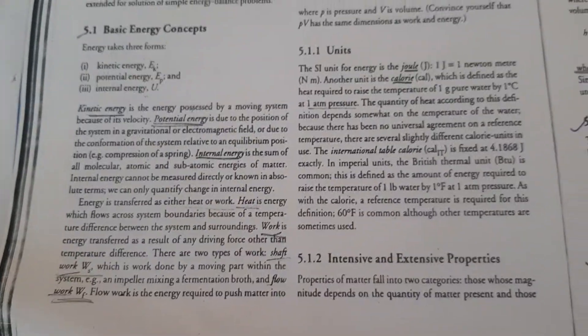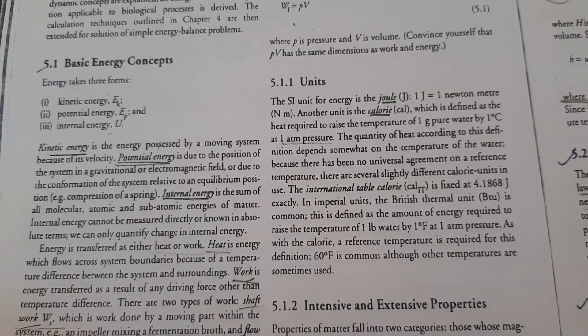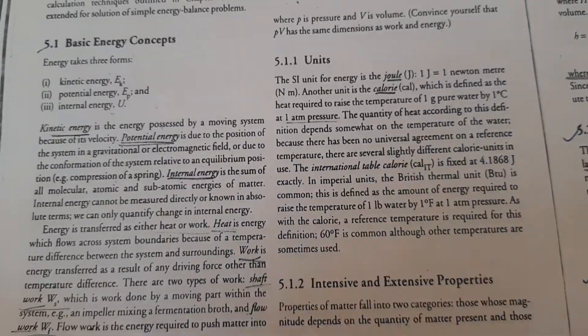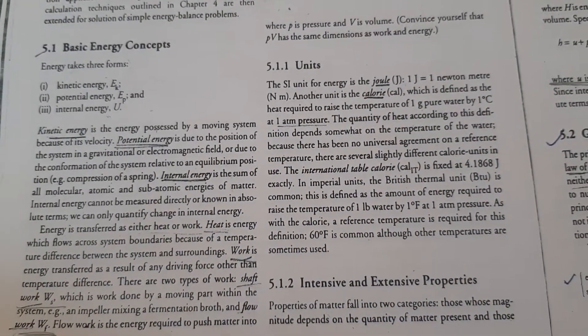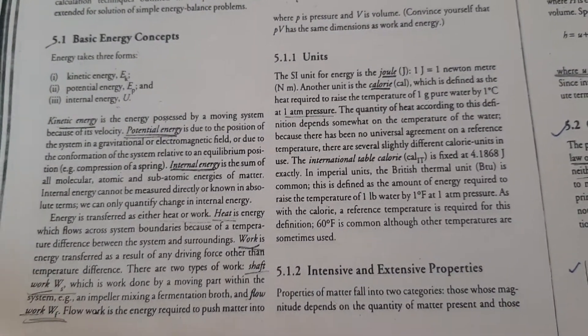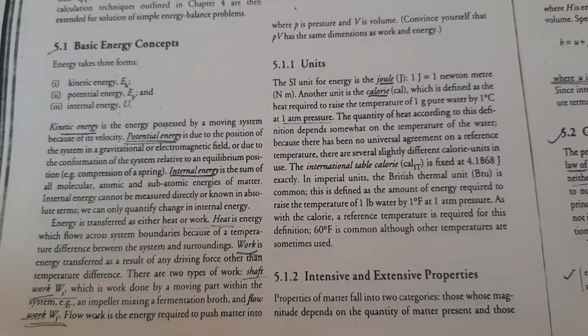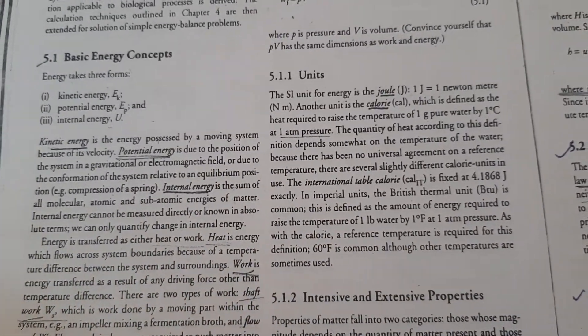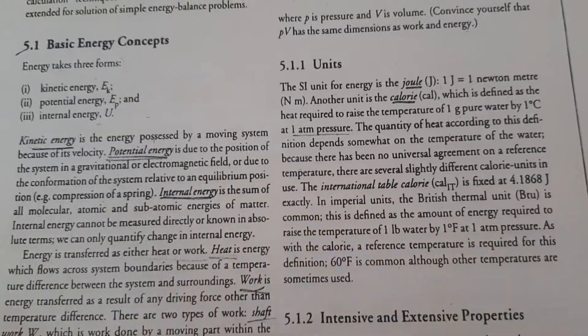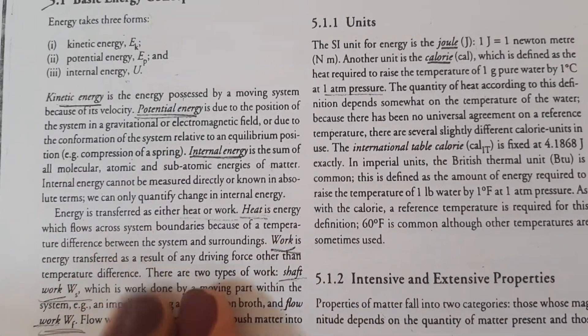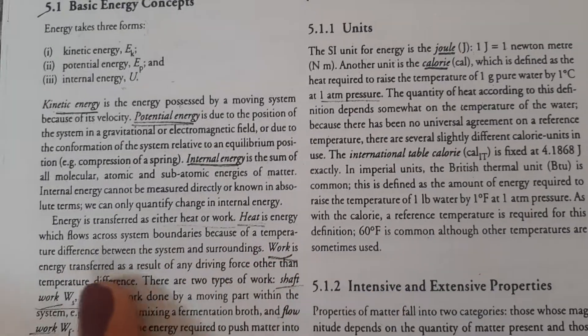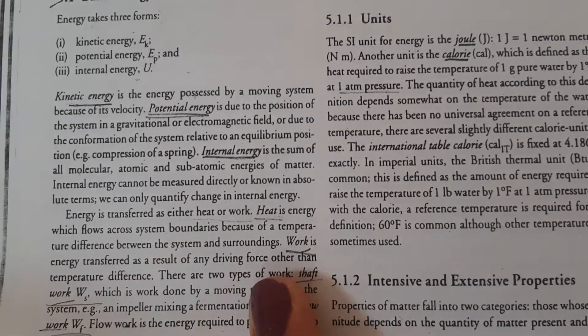When we are talking about bioprocess, means fermentation with agitation and temperature control to maintain proper growth and product formation. Heat is energy which flows across system boundaries because of temperature difference between the system and surrounding.